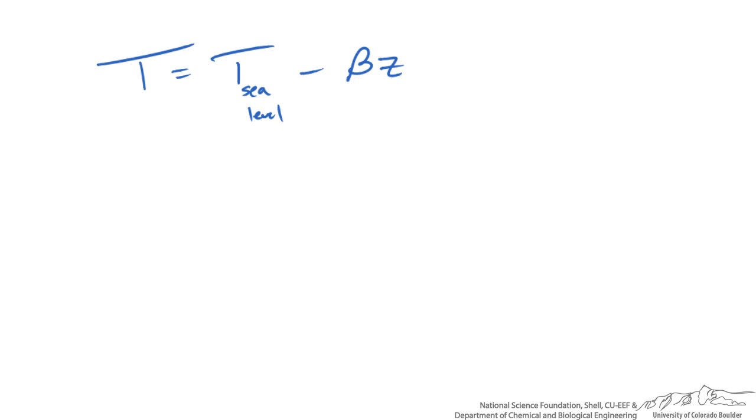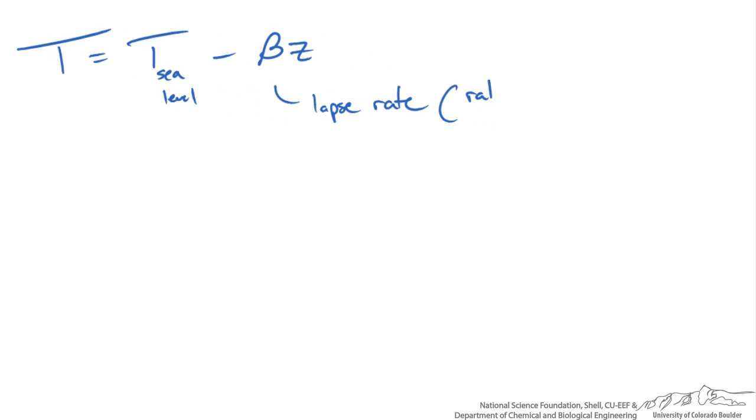This value beta is known as the lapse rate, which is really just the rate of change in temperature with elevation. So now we have a relationship between temperature and our change in elevation.